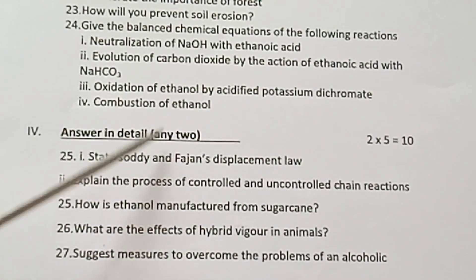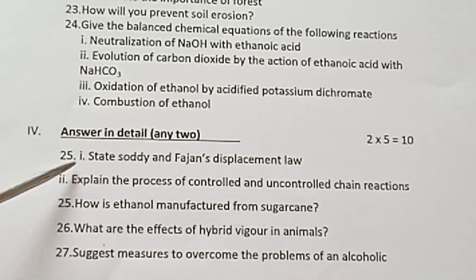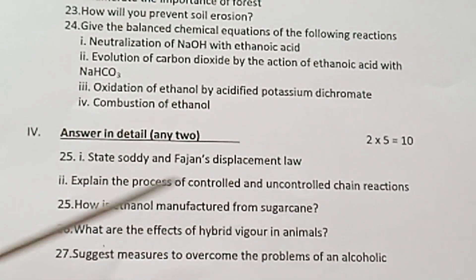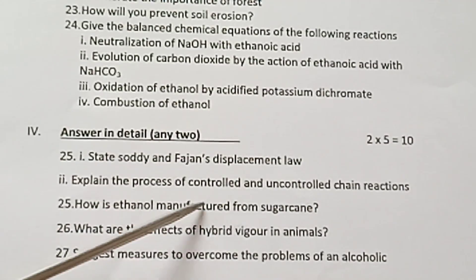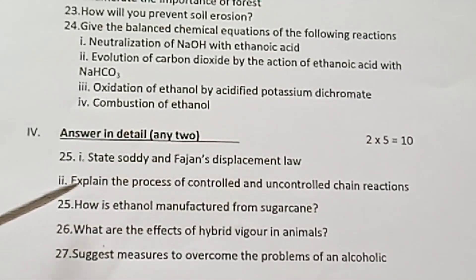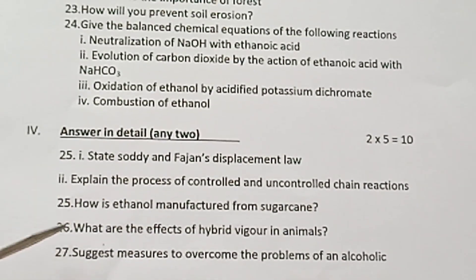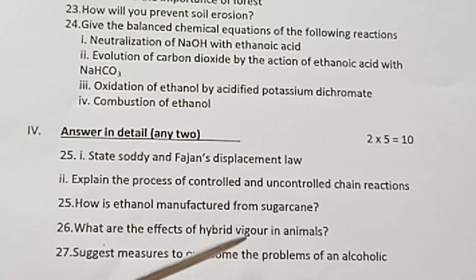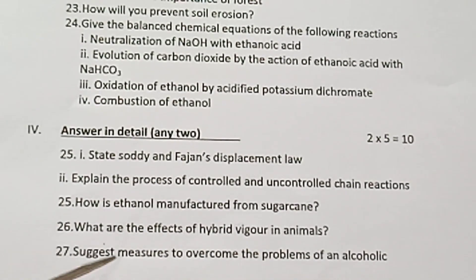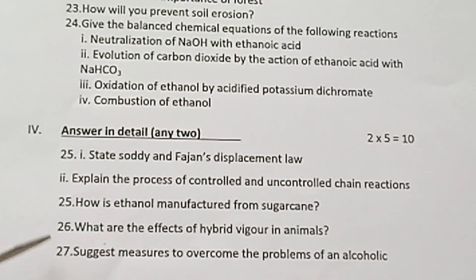Roman 4: Answer in detail. Write any 2 questions. 2 times 5 equals 10 marks. Question 25: State Soddy and Fajans Displacement Law. Explain the process of controlled and uncontrolled chain reaction. Question 26: How is ethanol manufactured from sugarcane? — Very important question. What are the effects of hybridization in animals?